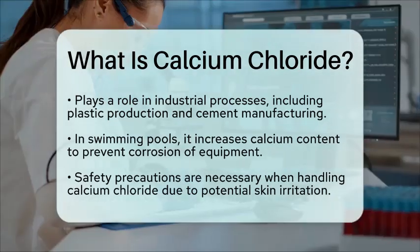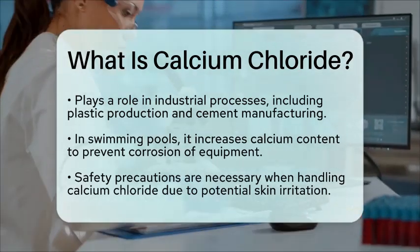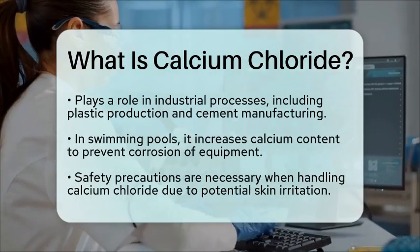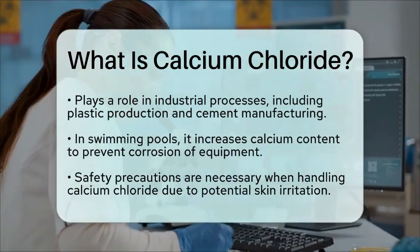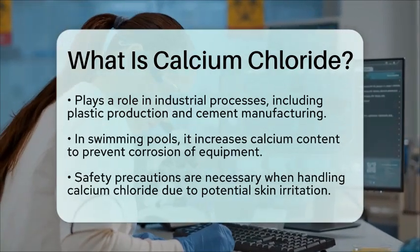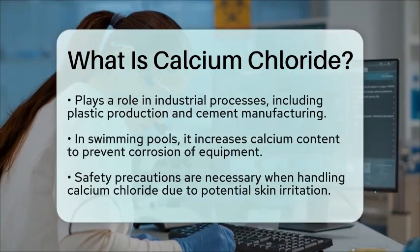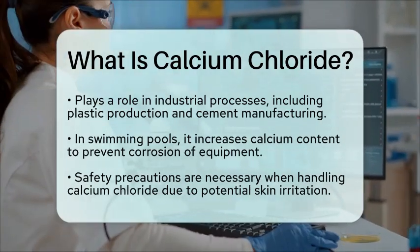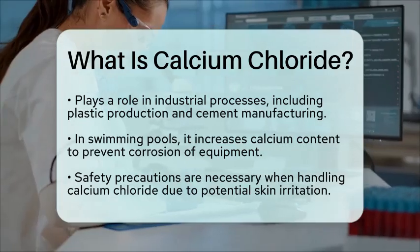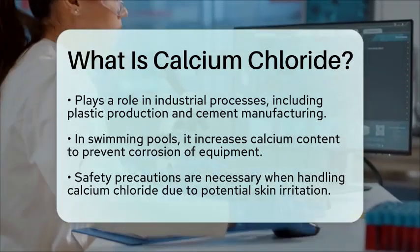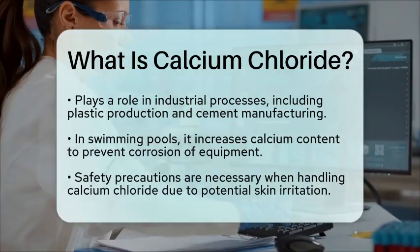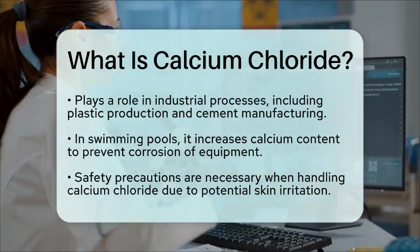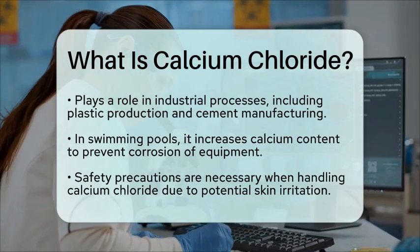In summary, calcium chloride is a versatile chemical with a wide range of uses, from melting ice to enhancing food preservation. Its ability to absorb moisture and its various applications in different industries make it a significant compound in both everyday life and industrial processes.